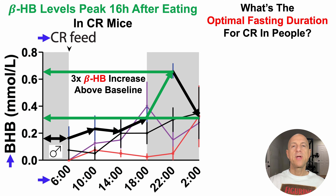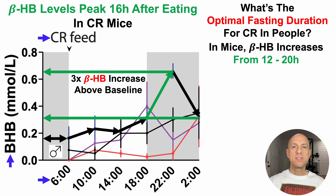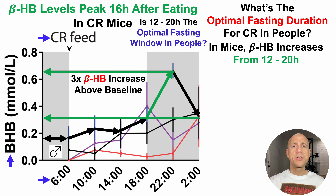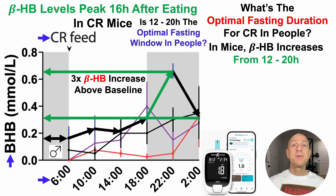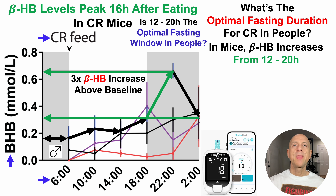When it comes to the optimal fasting duration in people, if we use the mouse data, beta-hydroxybutyrate increases from 12 to 20 hours of fasting. This raises the question: is 12 to 20 hours the optimal fasting window in people to get that systemic rise in circulating beta-hydroxybutyrate? To try to find out, I've been tracking it. I'm not going to show data in this video because I have less than a week's worth of data — I'm going to collect at least a month. I've been using a ketone meter. I'm not sponsored or affiliated, and I don't know which one is best, but this one does have some publications behind it.